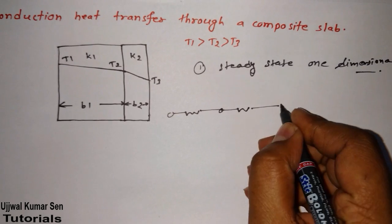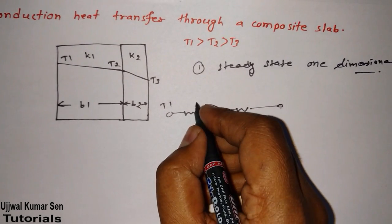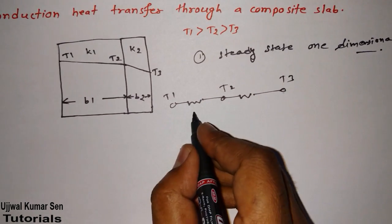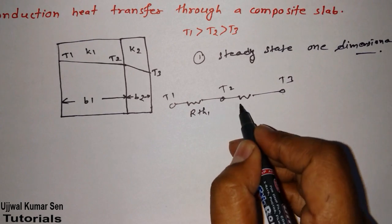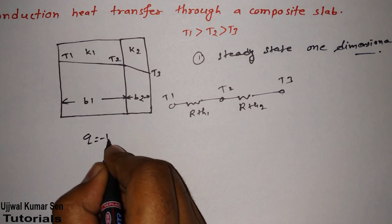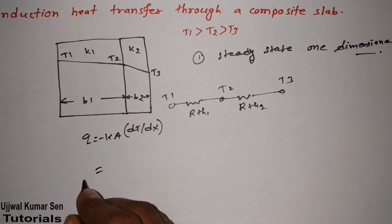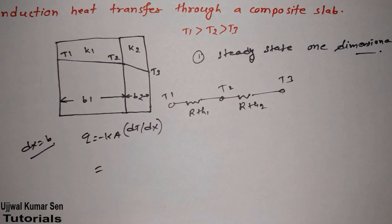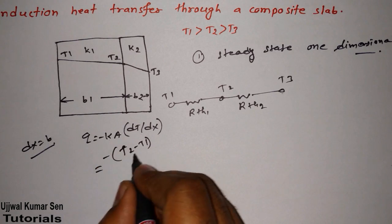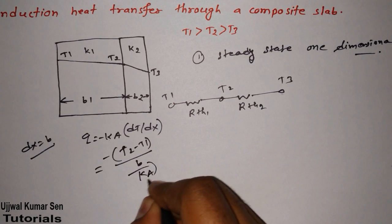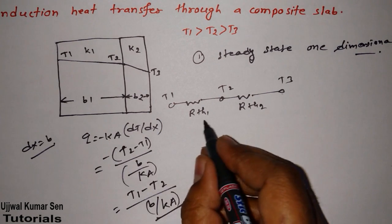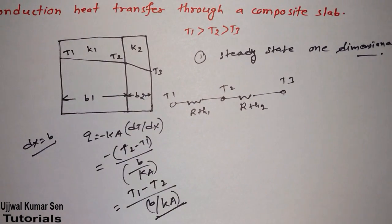Let me first draw the thermal circuit, which is really important for this question. Here T1 is the temperature, T2 is the intermediate temperature, and T3 is here. This gives us thermal resistances RTH1 and RTH2. According to Fourier's law of heat transfer, Q is equal to minus K·A·dT/dx.